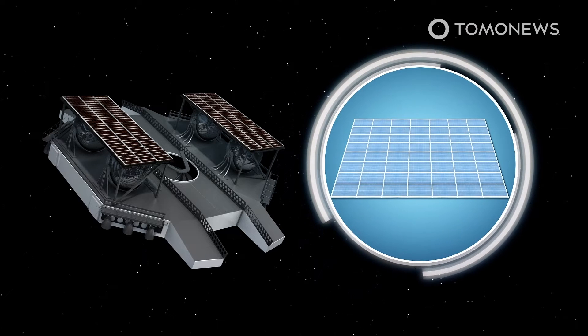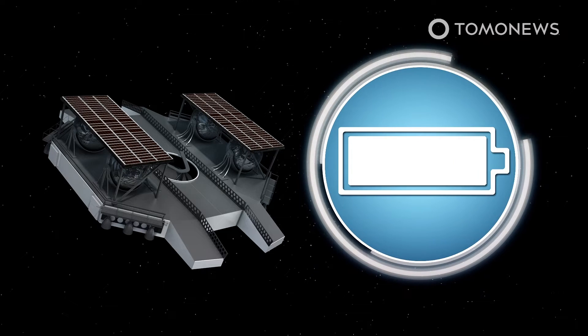As the lander makes its way to the moon, solar panels on its surface will supply power to batteries on the lander.